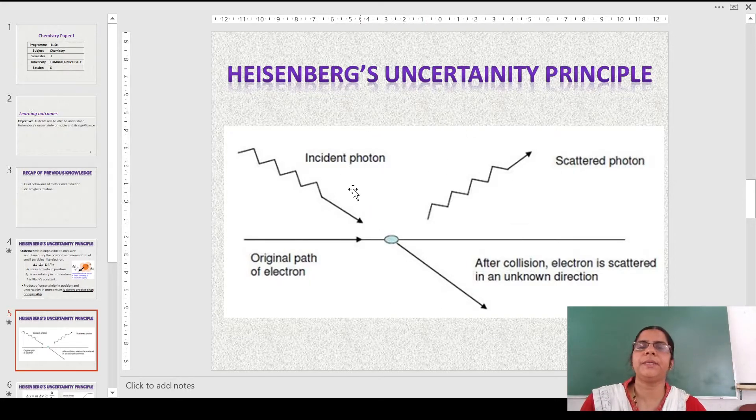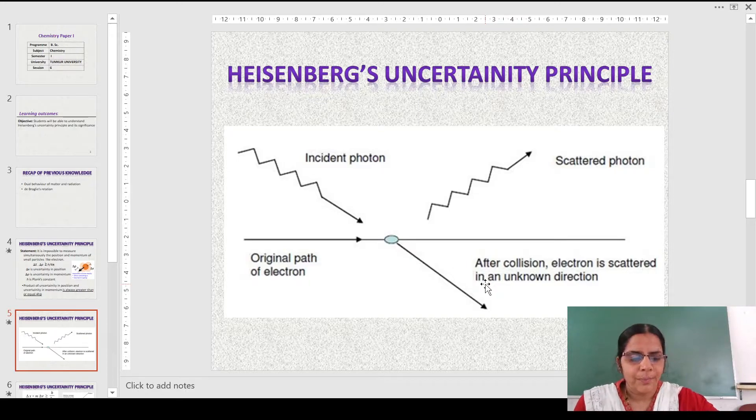Let us have a look at this particular diagram. If we imagine some small particle like an electron here, which is having its original path like this, if we shine a photon or radiation of a particular wavelength on this electron, because it reflects the radiation and some amount of radiation is scattered, the electron will no longer continue to be in this position. After the collision, it may change its position and that is not known. Hence, it may get scattered into an unknown direction.